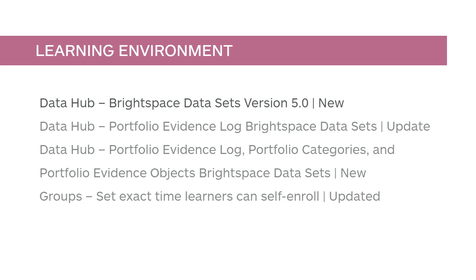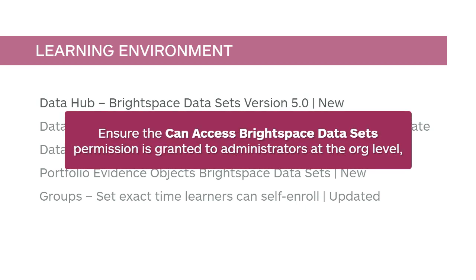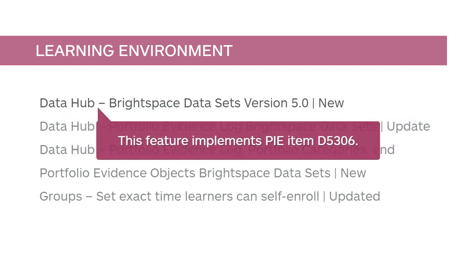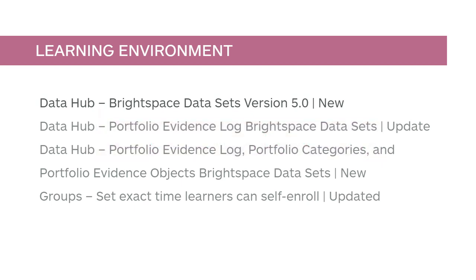Brightspace Datasets Version 5 is now available. Version 4 will continue to exist in parallel for six months. To enable, ensure the Can Access Brightspace Datasets permission is granted to administrators at the org level, and the D2L Tools, Brightspace Datasets, Version configuration variable is set to Version 5. This feature implements PI item D5306. For more information, review the release notes.